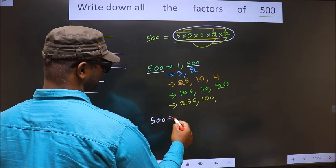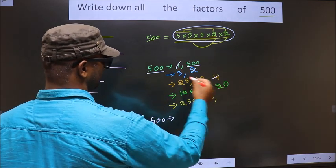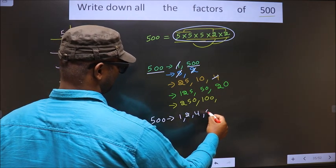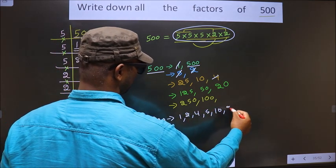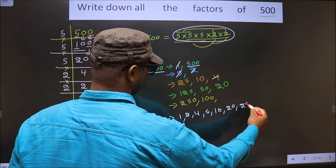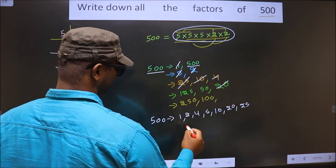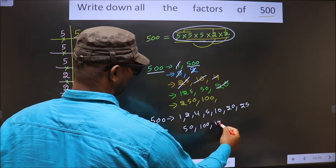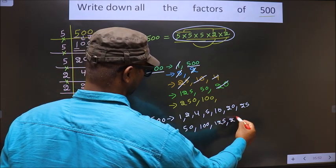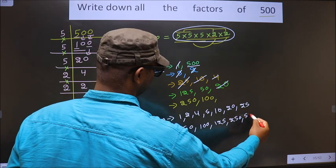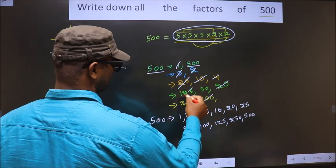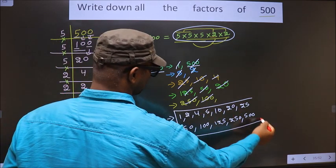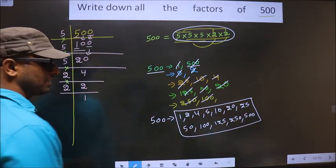The complete list of factors of 500 is: 1, 2, 4, 5, 10, 20, 25, 50, 100, 125, 250, and 500. These are all the factors of 500.